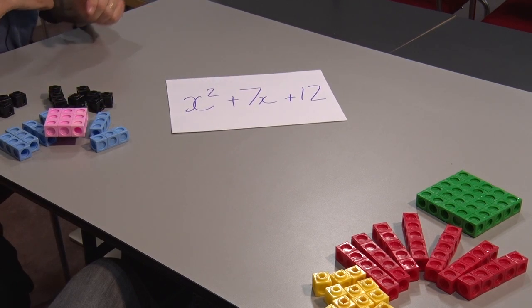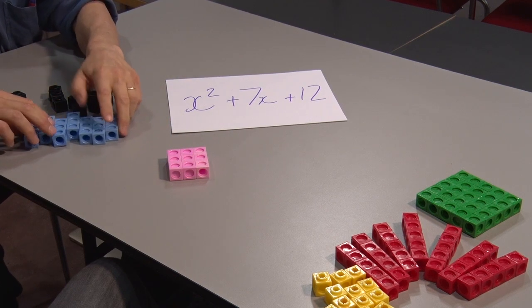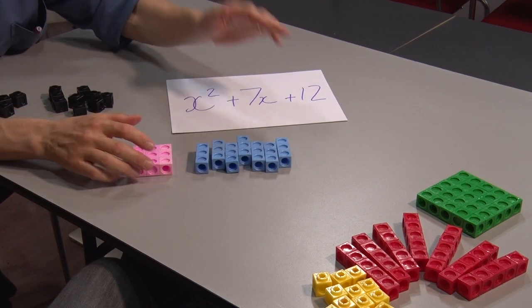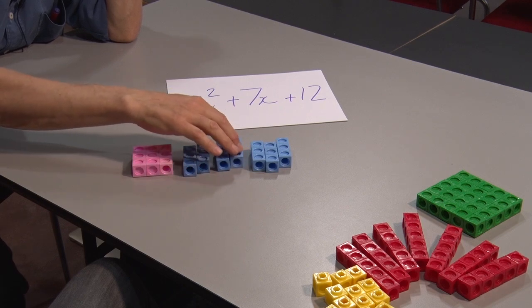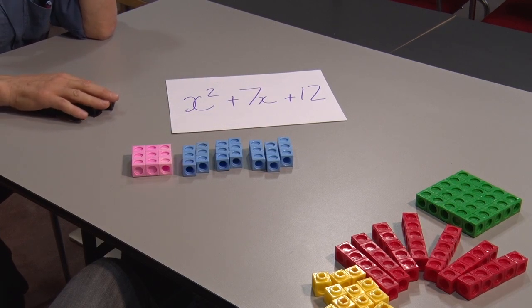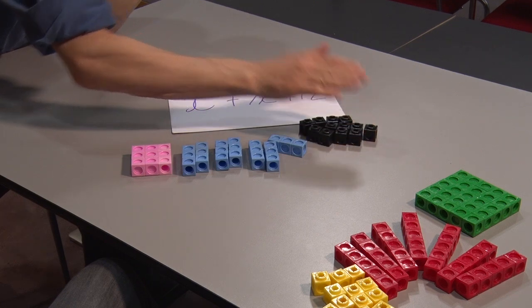Let me try in base 3. X squared, I've got 7 x's there: 1, 2, 3, 4, 5, 6, 7, and 12 units.